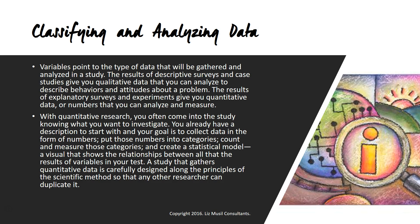Classifying and analyzing data: variables point to the type of data that will be gathered or analyzed in a study. The results of descriptive surveys and case studies give you qualitative data that you can analyze to describe behaviors and attitudes about a problem. The results of explanatory surveys and experiments give you quantitative data — numbers that you can analyze and measure. The benefits of qualitative research are that you get data giving you a picture of a problem and its features. You typically start most research problems with qualitative research because you need a basic description just to get started, though the study design may not reveal itself right away.